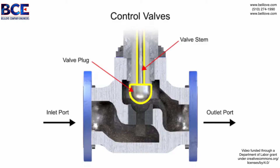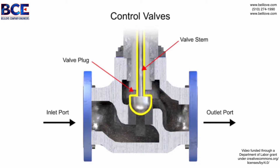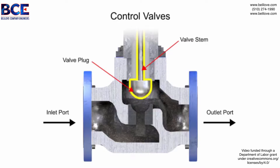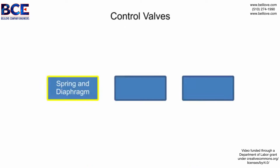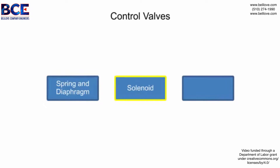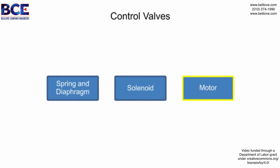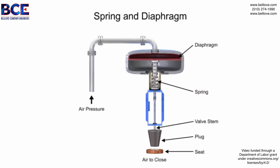The valve actuator is the component that physically moves the restrictor to vary the fluid flow. Three actuator types are used in control valves and they include spring and diaphragm, solenoid, and motor.